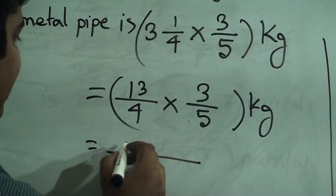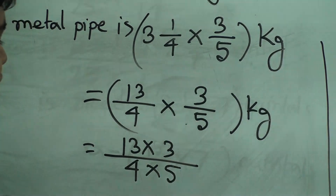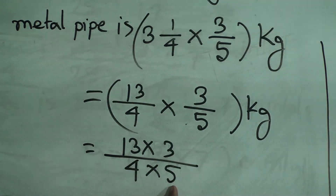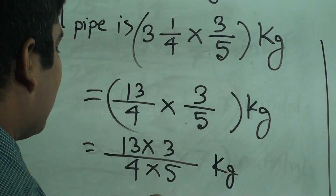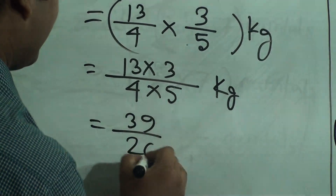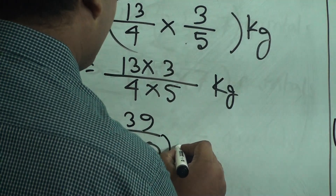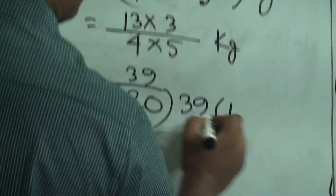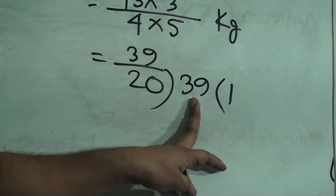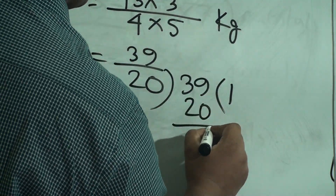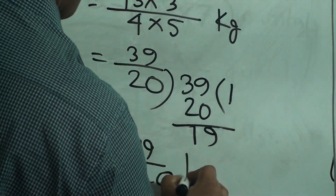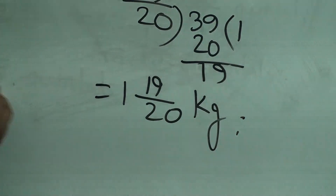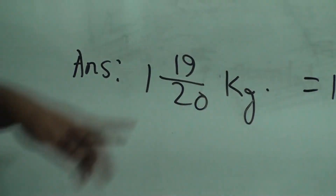Now we multiply numerator with numerator and denominator with denominator. Notice: 13 cannot be divided by 4 or 5, and 3 cannot be divided by 4 or 5, so we multiply directly. 13 threes are 39, and 4 fives are 20. This is an improper fraction, so we convert it to a mixed fraction. Dividing 39 by 20: 20 goes 1 time into 39; 20 ones are 20; subtract and we get 19. So the answer is 1 and 19/20 kg.